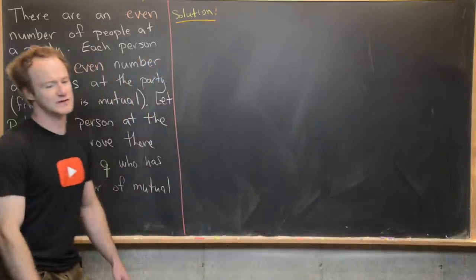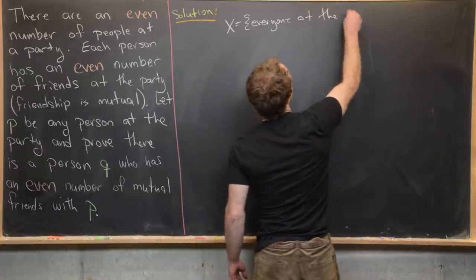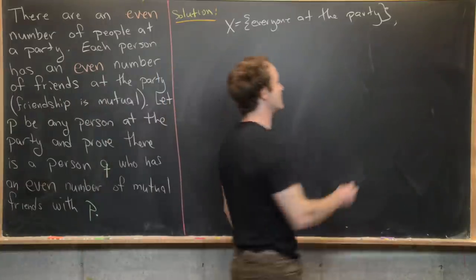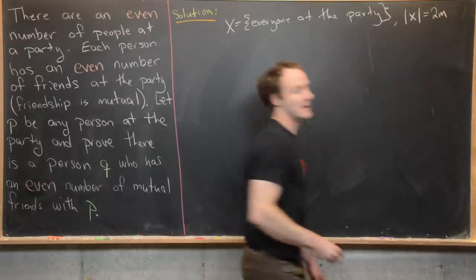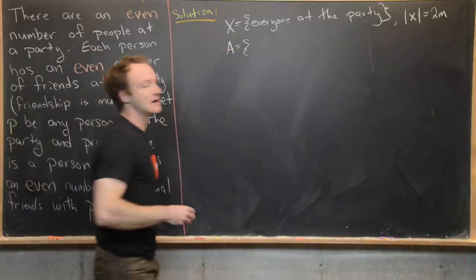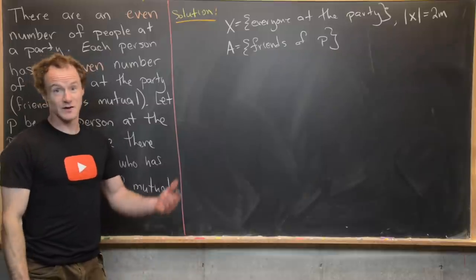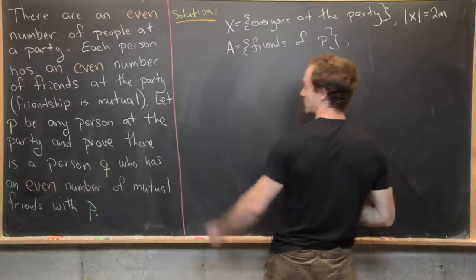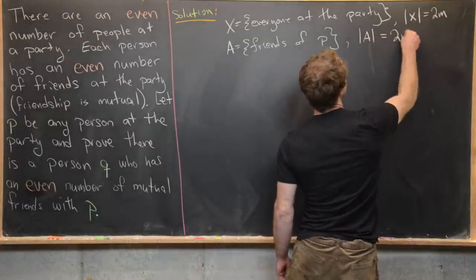Let's introduce some notation. I'm going to let X be the set of everyone at the party. We know there are an even number of people, so the size of X is 2M. Next, I'm going to set capital A to be all of the friends of P. Since every person has an even number of friends, the number of elements in A is 2N.